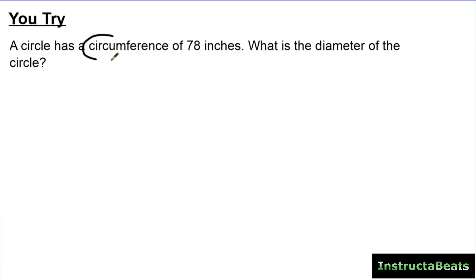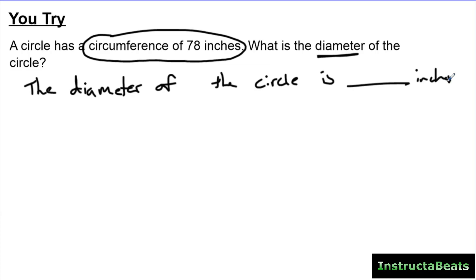So here we have a circumference of 78 inches, and we want to know the diameter of the circle. So my statement's going to say, the diameter of the circle is blank inches. So I have a circle. The circumference is 78. So I'm going to go ahead and just write down the circumference formula, because I see circumference and diameter. And I have 2πr.